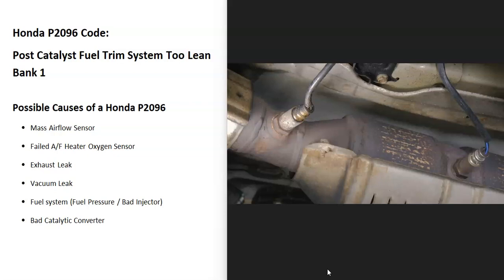With the P2096 code, these sensors are picking up that the system is running too lean, which basically means the engine is getting more air than fuel, so it's going to require troubleshooting why. Some possible causes include a bad mass airflow sensor, a bad oxygen sensor, an exhaust leak, a vacuum leak, a fuel system problem like low fuel pressure or a bad injector, and it's also possible the catalytic converter has gone bad.